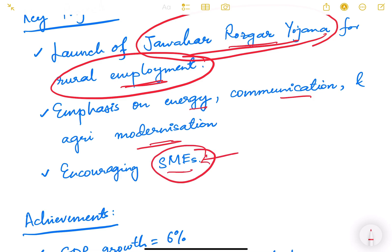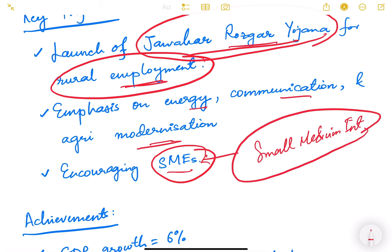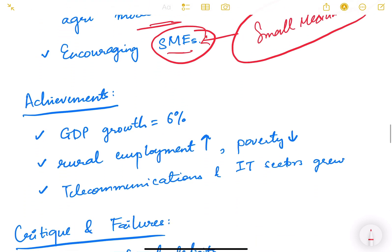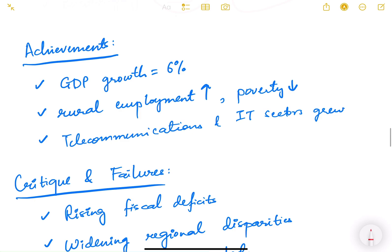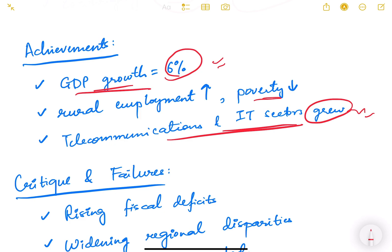We are now also focusing on small and medium enterprises, giving a role to the private sector. GDP growth during the seventh plan was 6 percent — since early privatization was allowed and the private sector was given a role, our growth rate improved. Rural employment increased and poverty reduced to some extent. The telecommunication and IT sectors also grew during this period.